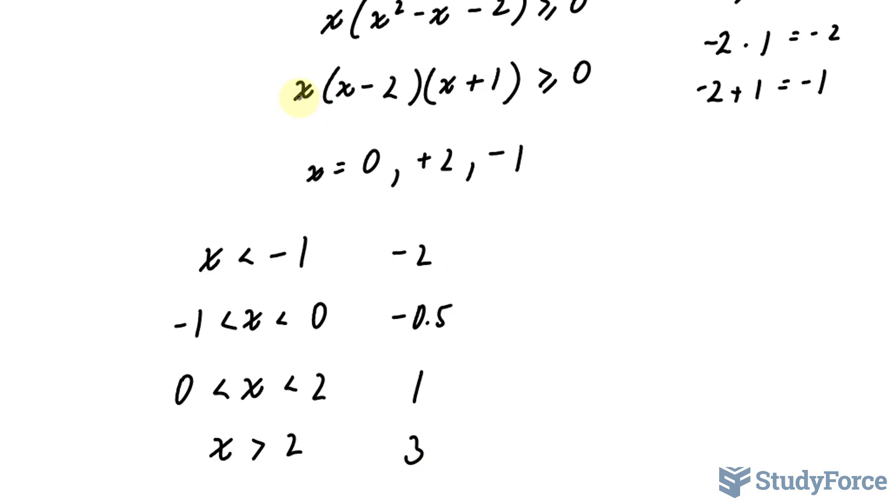If I input negative 2 into here, I don't need to use my calculator. I can just use my intuition. So putting a negative 2 into here gives me a negative number. Putting a negative 2 into here gives me another negative number. So negative times negative. And negative 2 into here gives me another negative number. Negative times negative is positive, times negative is negative.